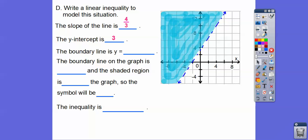There's the y-intercept. So the boundary line is y = mx + b, so y = 4/3x + 3 right there. That would be our boundary line.